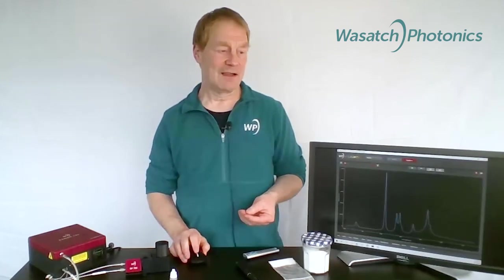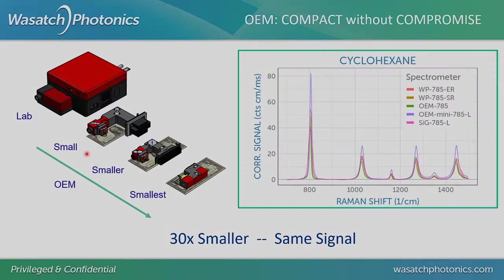But say you're not interested in the lab spectrometer — you don't want to develop your own instrument, but you want to use this superpower of Raman instant analysis. What you need is an OEM bench, the actual Raman engine from Wasatch. We give you a choice of different sizes, from small to smallest, without actually compromising on the signal.